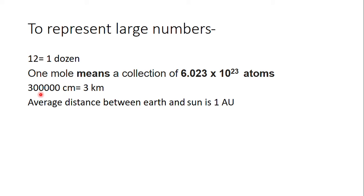if I say that I travelled 3 lakh centimetres, will it not sound odd? So instead, you can use a simplified unit and say 3 kilometres. Similarly, 1 astronomical unit is a unit used to represent the distance between the earth and the sun.